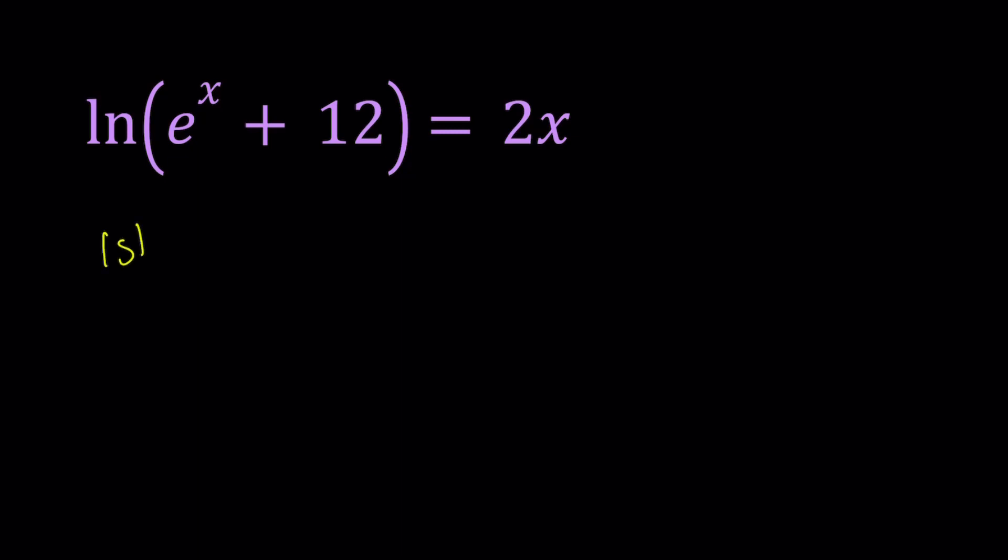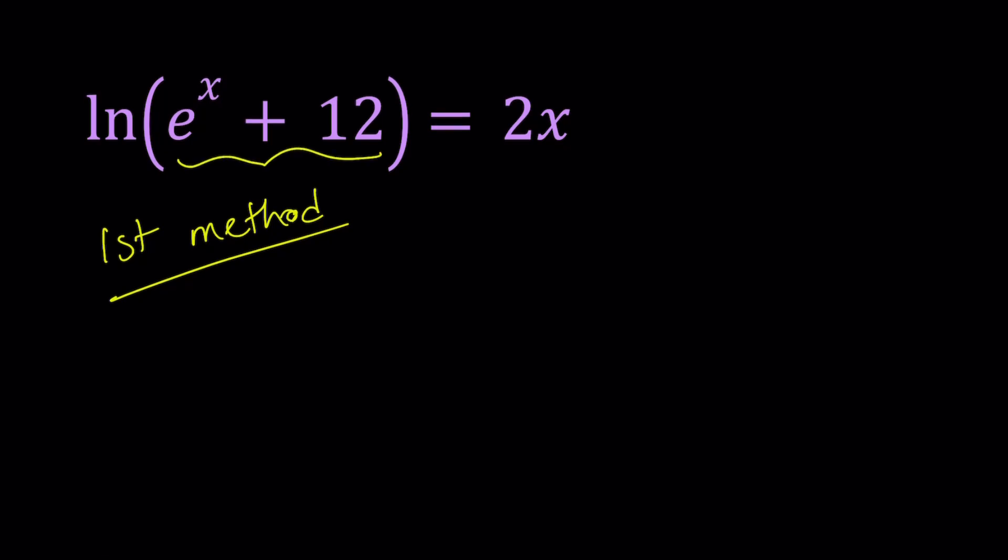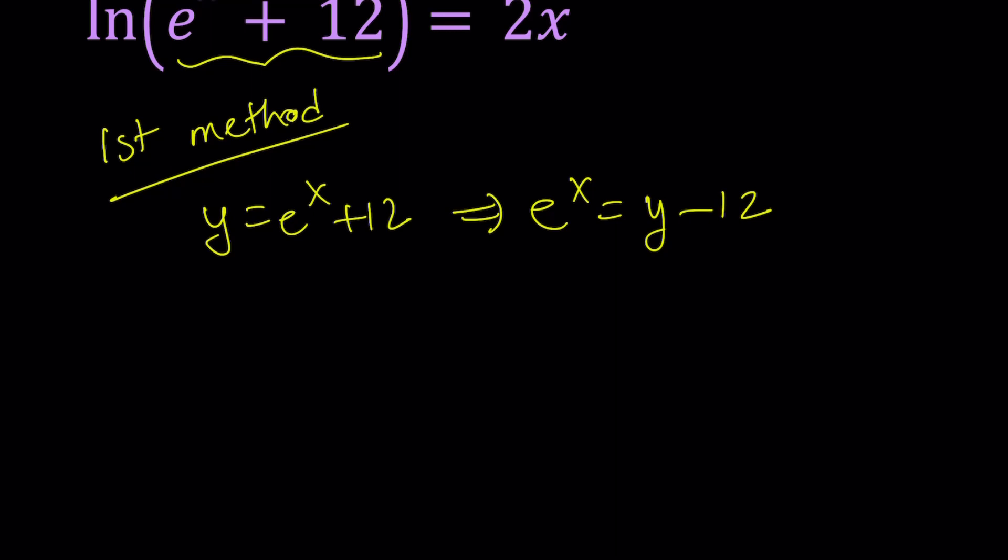All right, let's start with the first method. For my first method, I'm going to use substitution. So let's go ahead and call this thing inside the parentheses y. This implies that e^x can be written as y - 12. And then if you ln both sides, x is going to move to the front, and you're going to get ln e, which is 1. So x becomes ln(y - 12).